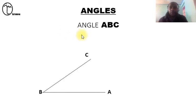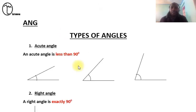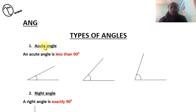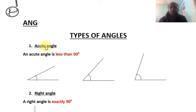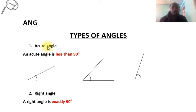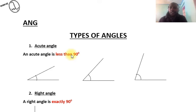In the next topic I'll teach you the four main types of angles. Welcome back. We have four types of angles. The first type is called an acute angle — this is the smallest angle that is formed. An acute angle is less than 90 degrees.